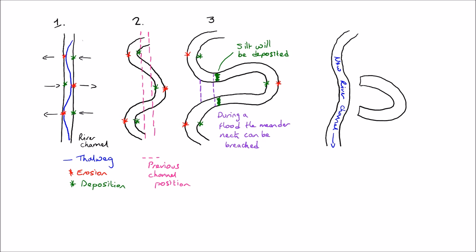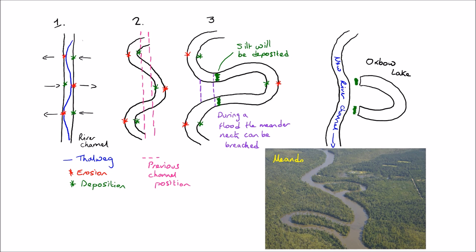And you can see in the last diagram, what then occurs is that eventually this neck, or this big meander, will become separated. And that is that feature that's called an oxbow lake, you can see in the final diagram.